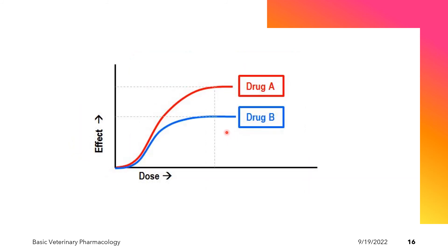This is another dose-response curve of two drugs, A and B. Drug A in red achieves a higher maximum effect compared to drug B. Therefore, drug A is more efficacious than drug B because it achieves a higher maximum effect on the dose-response curve. When examining efficacy across drugs, we always look at the vertical axis — the higher the position on the dose-response curve, the higher the efficacy of that drug.